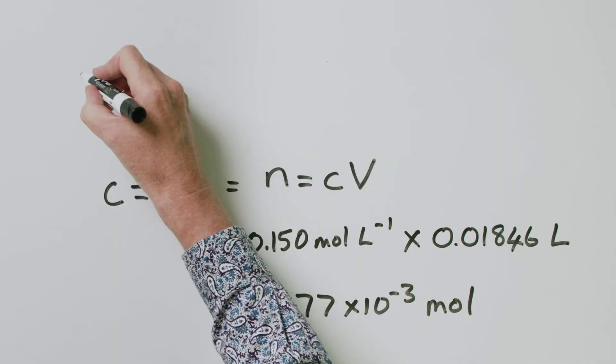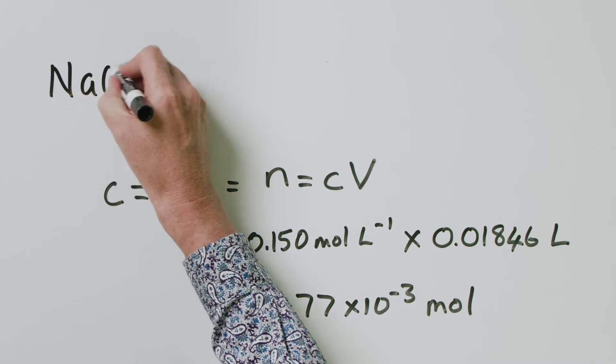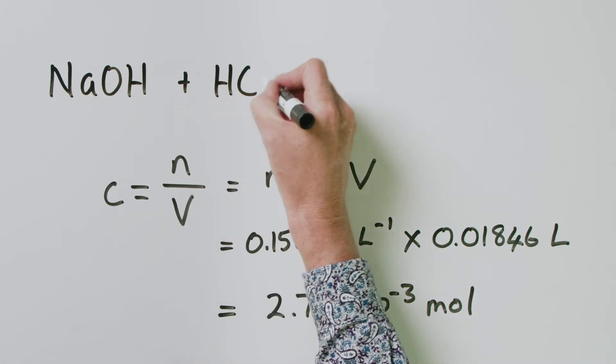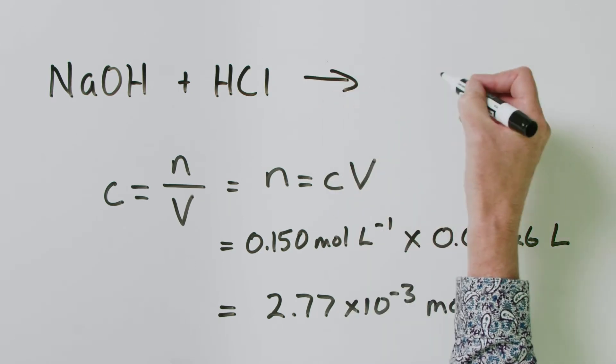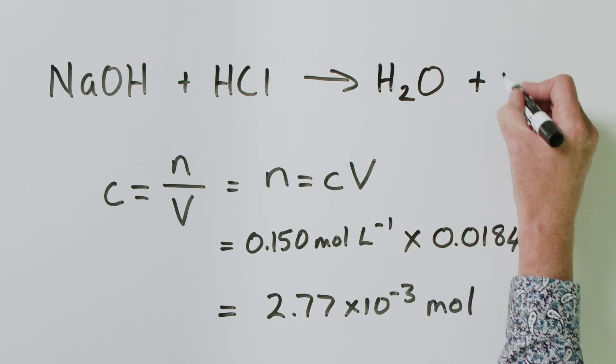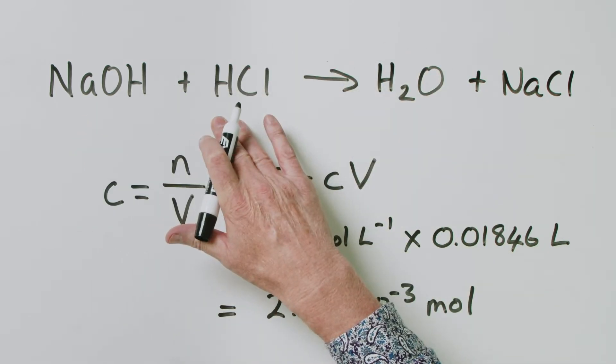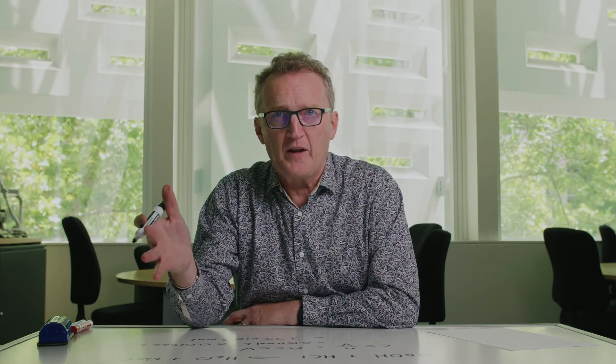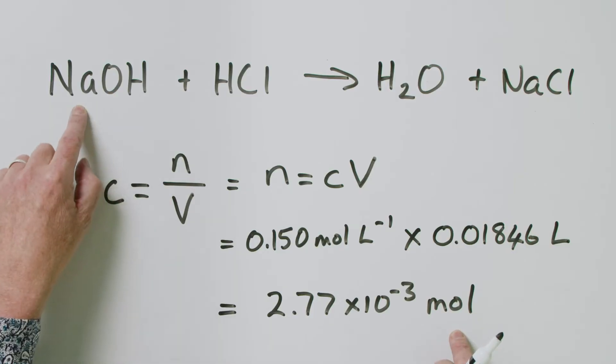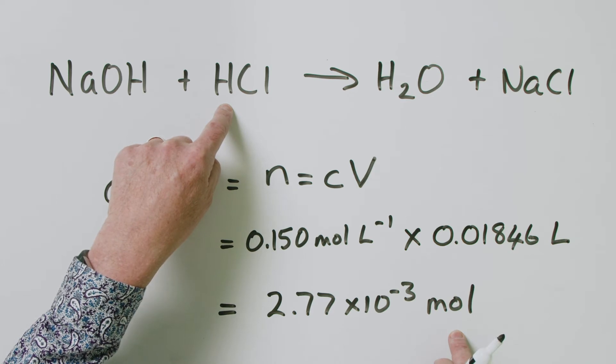Now, we've forgotten to do one really important thing. And hopefully, you can all guess what it is. The one thing we haven't done is we haven't written our balanced chemical equation. Because this is a stoichiometry problem. You've always got to know what your balanced chemical equation is. So, sodium hydroxide plus HCl, acid plus base, remember, gives salt plus water. So, we get H2O plus NaCl. We need that because that shows us our mole ratio. And luckily here, as it is for most acid-base reactions, our mole ratio is one to one. So, we don't have to do anything. We know that the number of moles of sodium hydroxide is going to be the same as the number of moles of HCl.